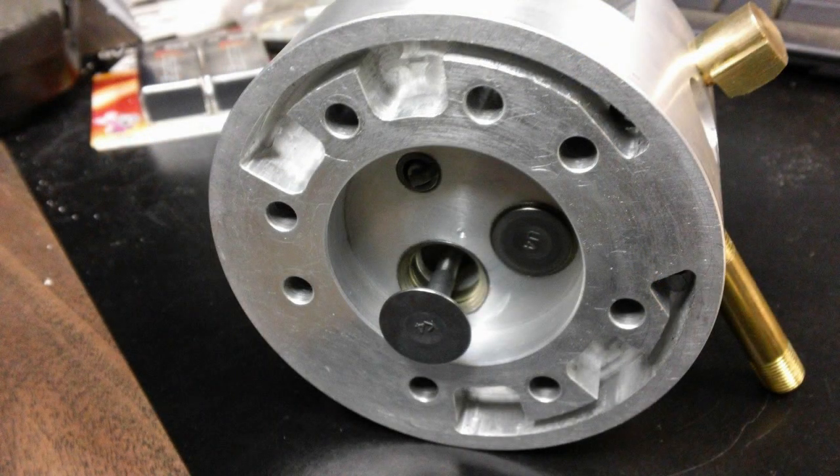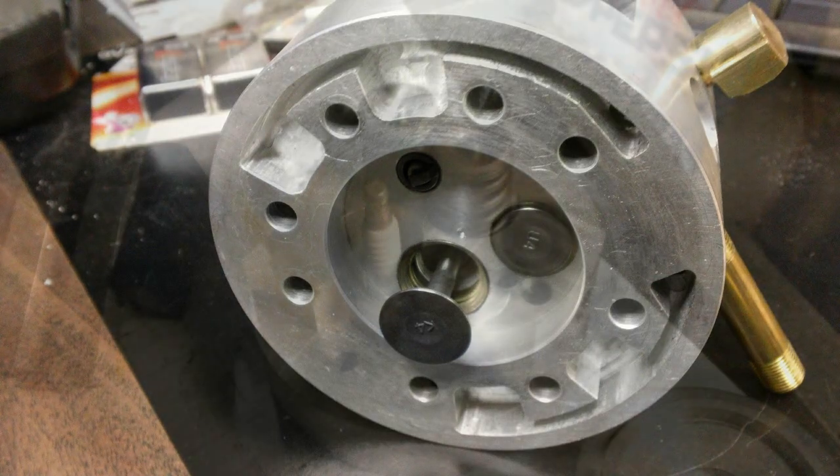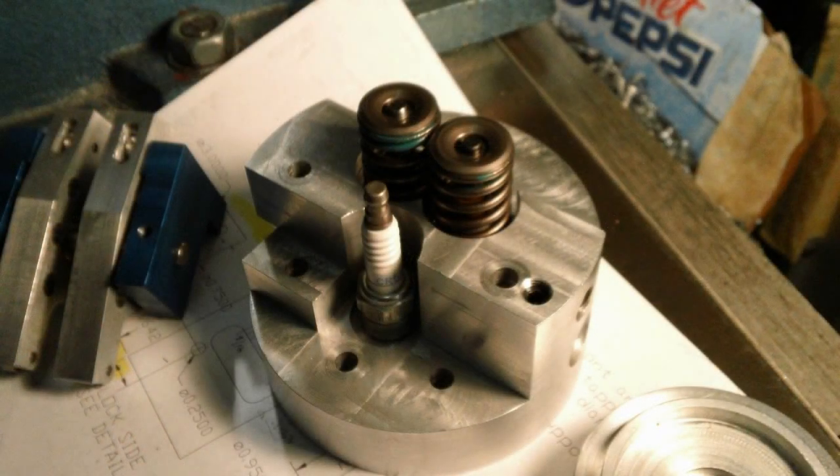The valves, valve springs and guides are from a Honda 50. The guides were pressed into the head and honed. The valve seats were cut from mold star, a hard brass alloy, and pressed into the head.